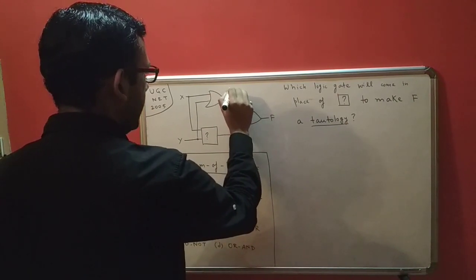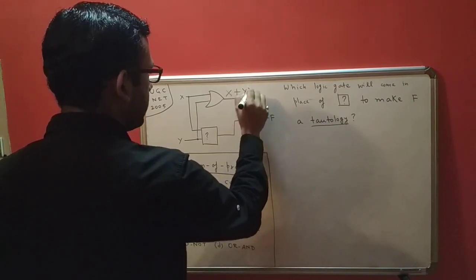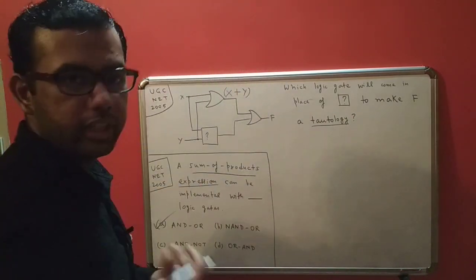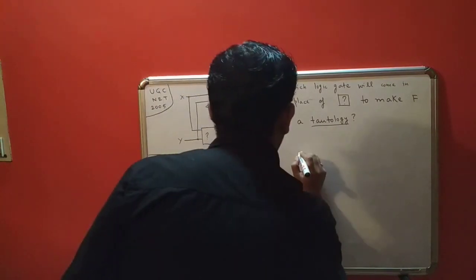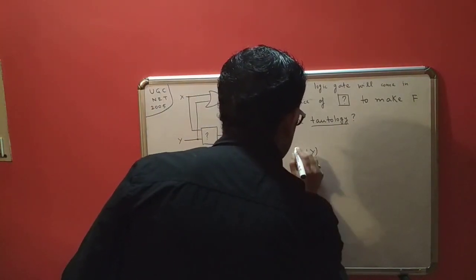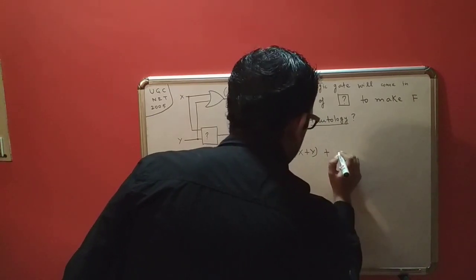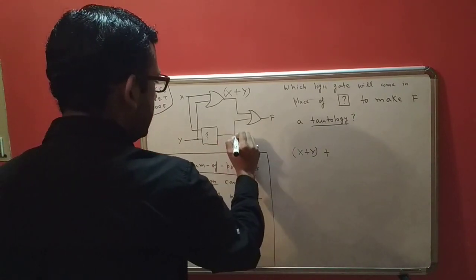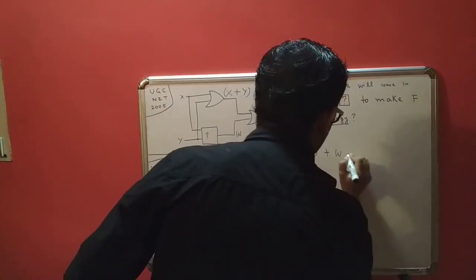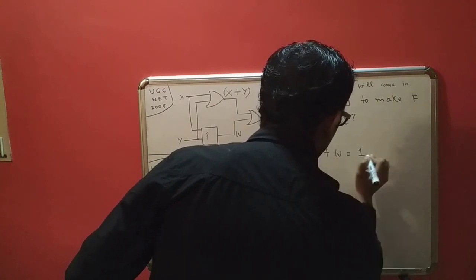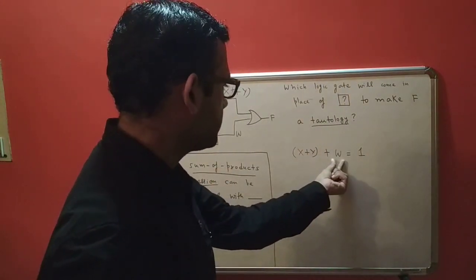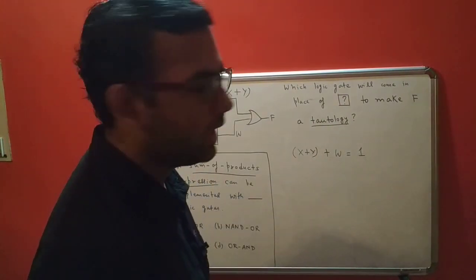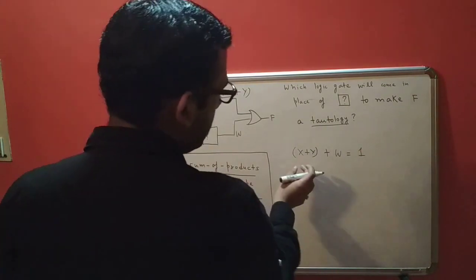Looking at the OR gate, we have x OR y, plus the output from this box — let it be w. So x OR y OR w will give me one, meaning w must be some combination of x and y such that I can get a one.